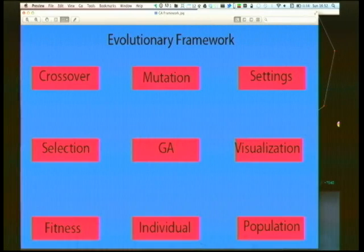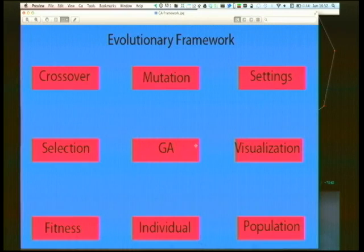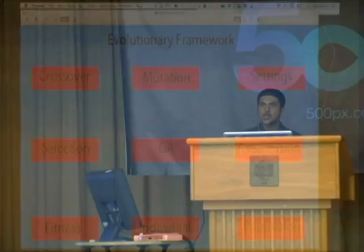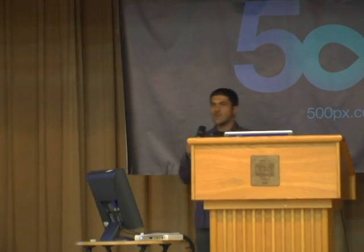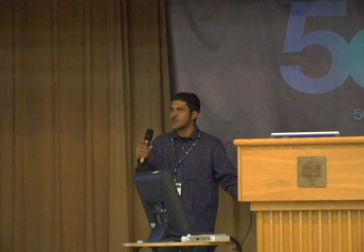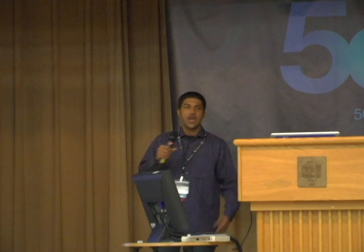This is really what my framework is all about. It has nine files. ga.py, right in the middle, has the strategy for evolution. So if you want to evolve differently — select individuals differently, mutate them at different times, or cross them over at different times — all of that is handled right there.